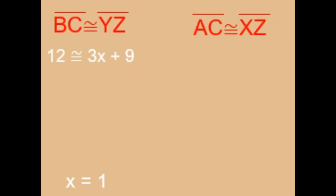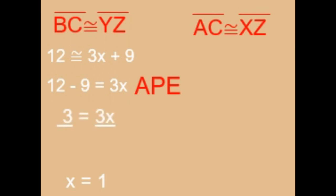Since side BC equals 12 and side YZ equals 3x plus 9, we isolate 3x using the addition property of equality: 12 minus 9 equals 3x, so 3 equals 3x. Dividing both sides by 3 — the division property of equality — gives us x equals 1.